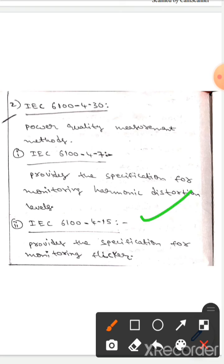The next one is IEEE 6100415, which provides the specifications for monitoring flicker.